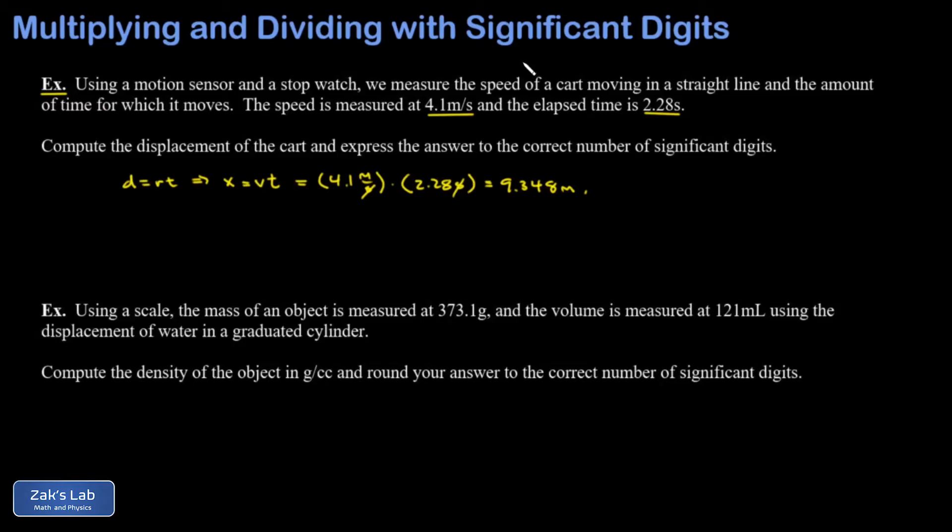Now we need to round the answer to the correct number of significant digits. So we just look for the participant quantity that had the fewest number of significant digits, and that was the 4.1 that has two significant digits. So we're going to round off to two significant digits as 9.3 meters and we're done.